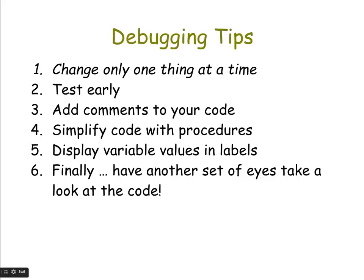Here are a couple of tips for debugging. First, change only one thing at a time — if you make too many changes, you won't know which change caused or fixed an error. Another key is to test early as you're programming, so you have a set of code that's working correctly, then add blocks and functionality incrementally and test only the new parts. You can also add comments to your code so it's easier to read and reminds you what those blocks are supposed to be doing.